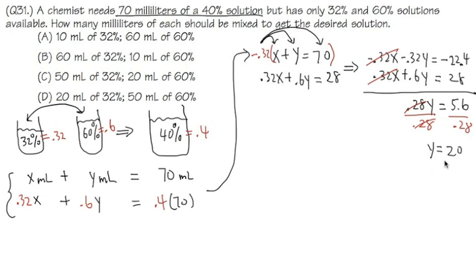We're almost done. We know y equals 20. Now we come back to the equation and solve for x. x plus y equals 70, and y equals 20, so we subtract 20 from both sides, giving x equals 50.